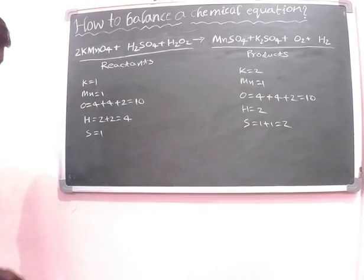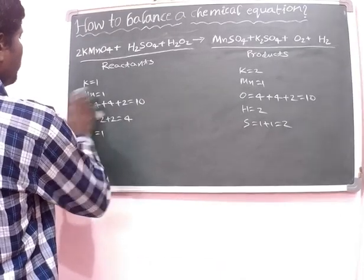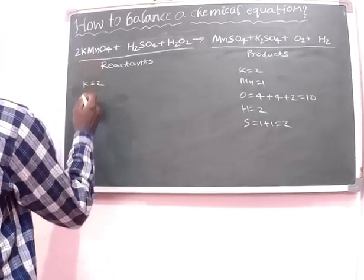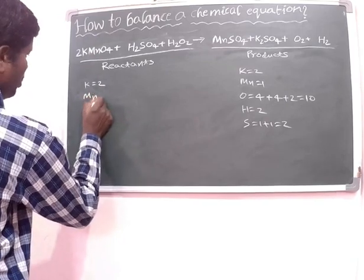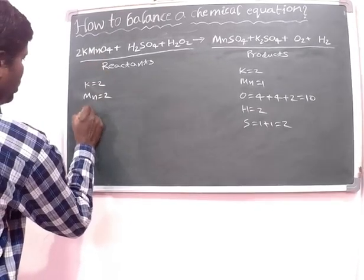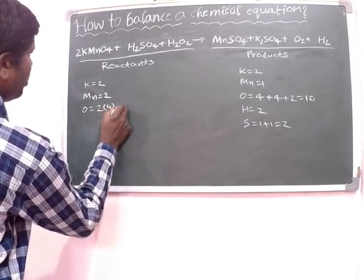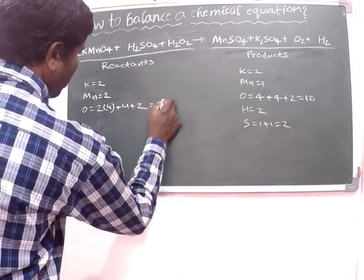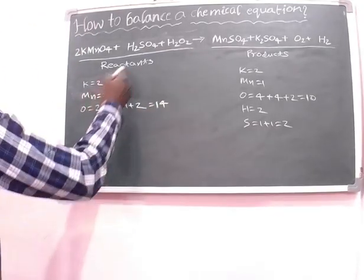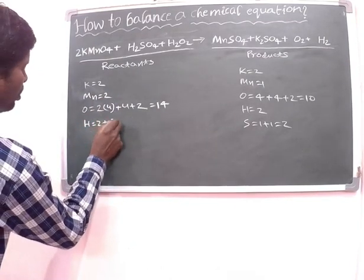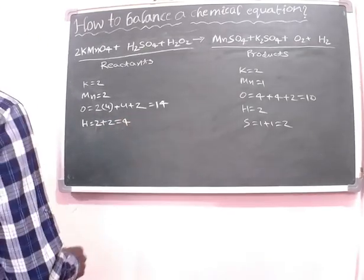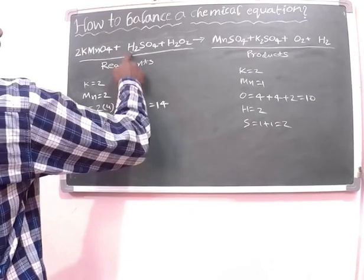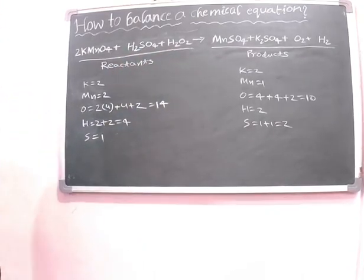Now the number of atoms is changed. The number of potassium atoms is now 2, the number of manganese atoms is 2, the number of oxygen atoms is 2 into 4 plus 4 plus 2, that is equal to 14, the number of hydrogen atoms is 2 plus 2, that is equal to 4, and the number of sulfur atoms is 1. Now the potassium atoms are balanced.